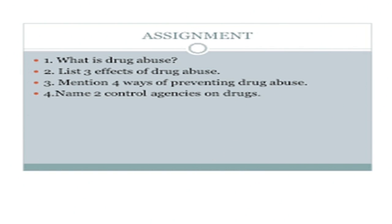Up to there, we come to the end of our lesson. Before I summarize, I leave you with these assignment questions to attempt, and when we meet in our next lesson, we will discuss them. Your assignment: define drug and what is drug abuse; list three effects of drug abuse; mention four ways of preventing drug abuse; and name two control agencies on drugs. Remember, this was lesson one. In lesson two, we shall review these questions before moving to lesson number two.